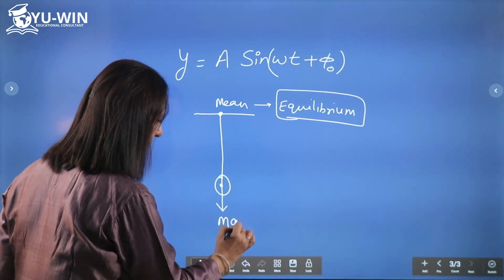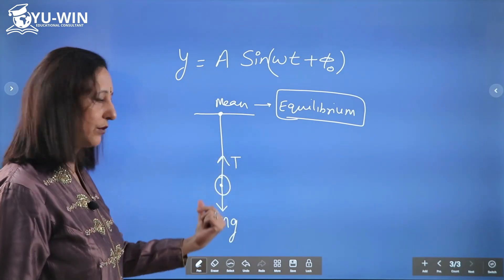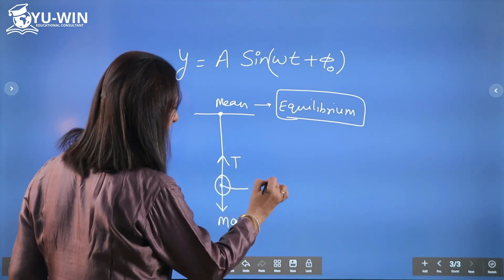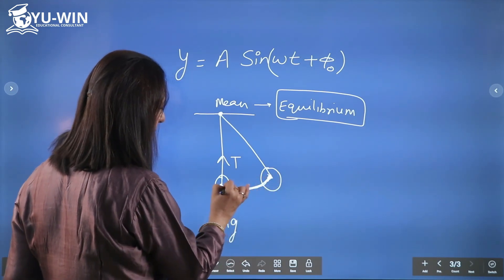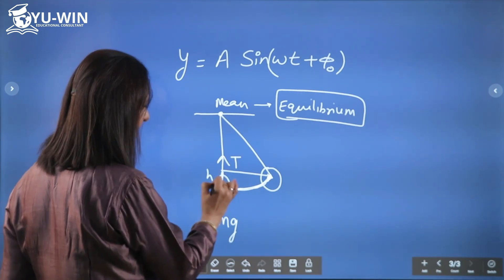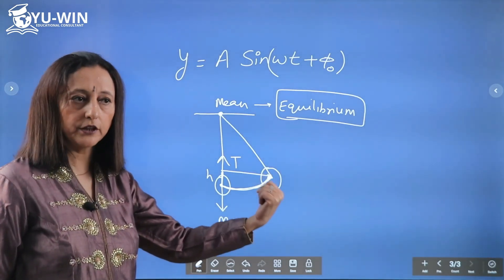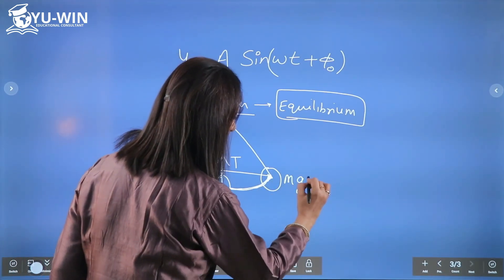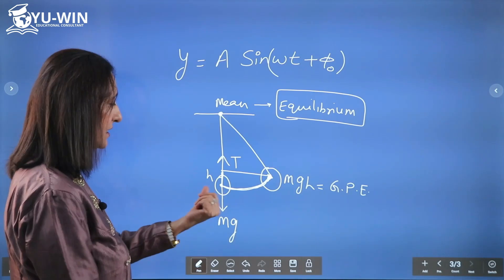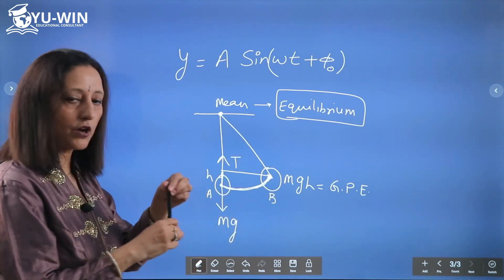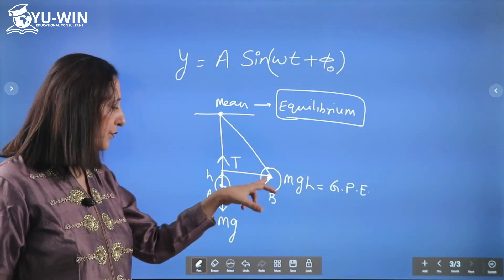At equilibrium position, the net force on the body is zero. For a pendulum, mg acts downward and tension T acts upward, so T = mg. If I displace the bob from its mean position to a height h, some external agent has done work in raising the center of the bob through height h. That work is stored in the bob as gravitational potential energy mgh. At this extreme position — point B — the bob is displaced from mean position A. When you release the bob, it comes back to mean position.